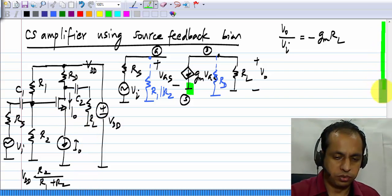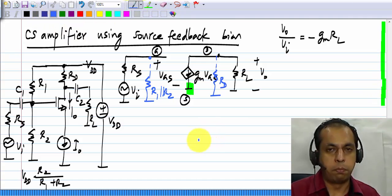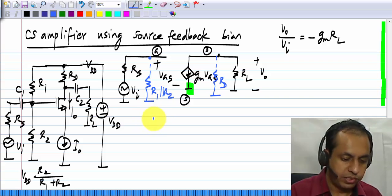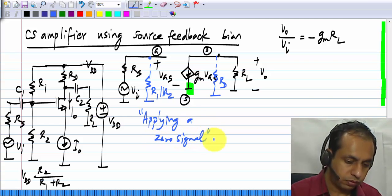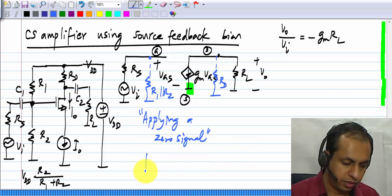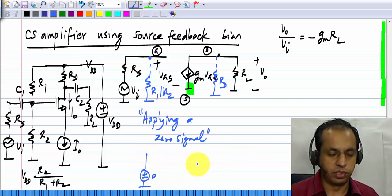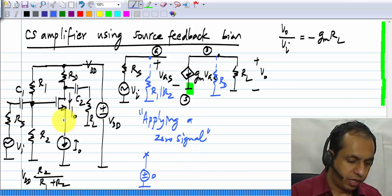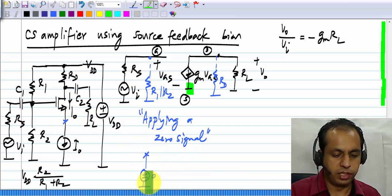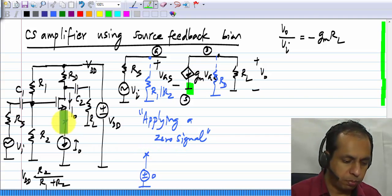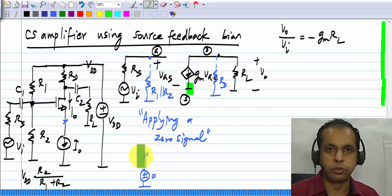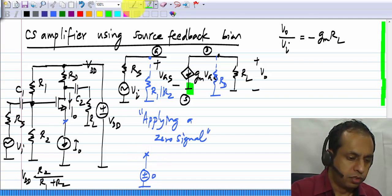And we can use a similar idea to connect the source to ground for signals. When we say we have to connect the source to ground, essentially you can think of it as applying zero signal to the source of the transistor. So, let us say I have a source that is zero, and the source of the MOS transistor has to get connected to this. Essentially, it should get shorted to ground for signal frequencies.